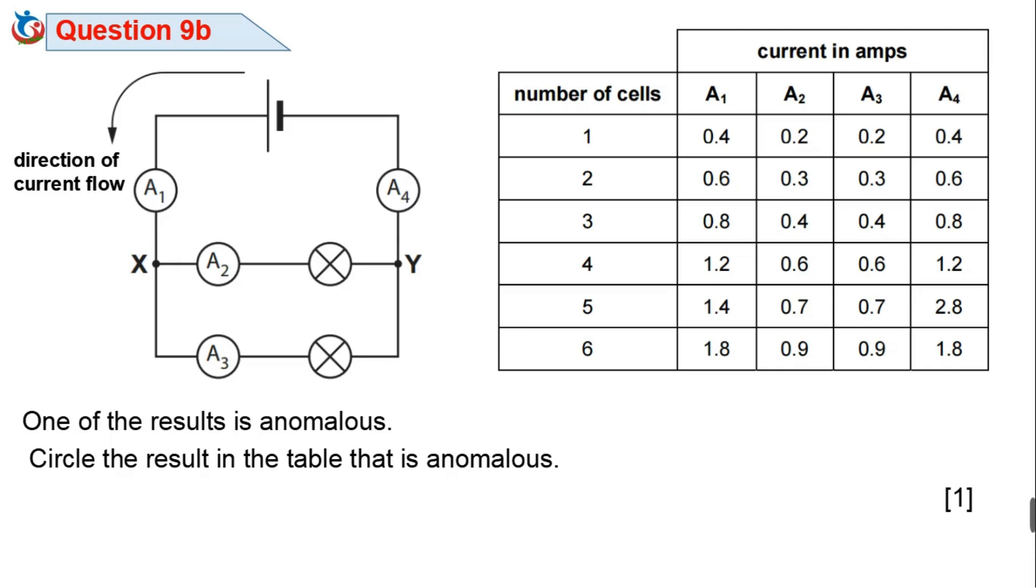When the number of cells is 1, A1 ammeter reads 0.4, A2 ammeter reads half of A1 which is 0.2, A3 reads the same result as A2 which is 0.2, and A4 reads the same result as A1 which is 0.4. The trend continues like this from when the number of cells is 1 to when the number of cells are 4. But when the number of cells are 5, A1 ammeter reads 1.4, A2 ammeter reads half of A1 which is 0.7 and that is absolutely correct, A3 reads the same result as A2 which is 0.7 and that is still normal as expected.